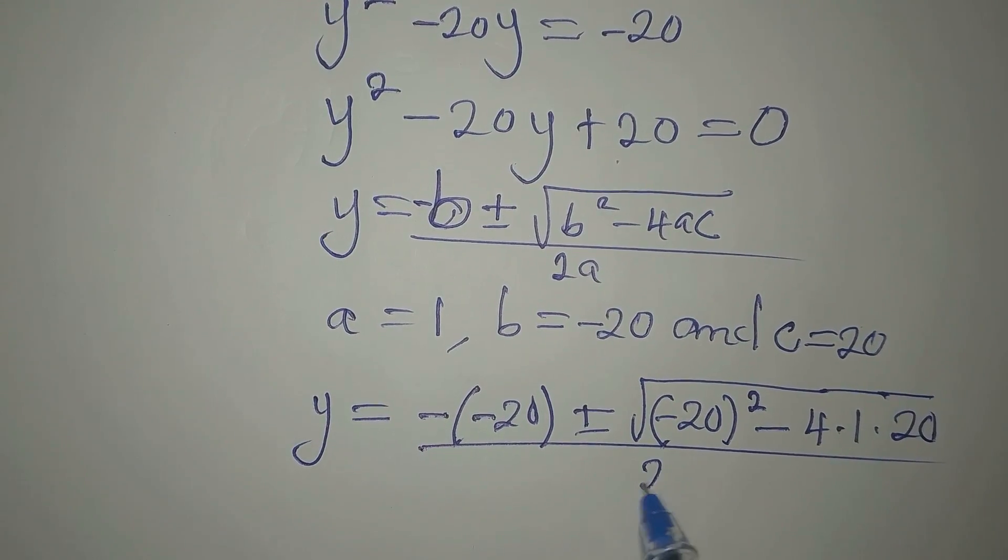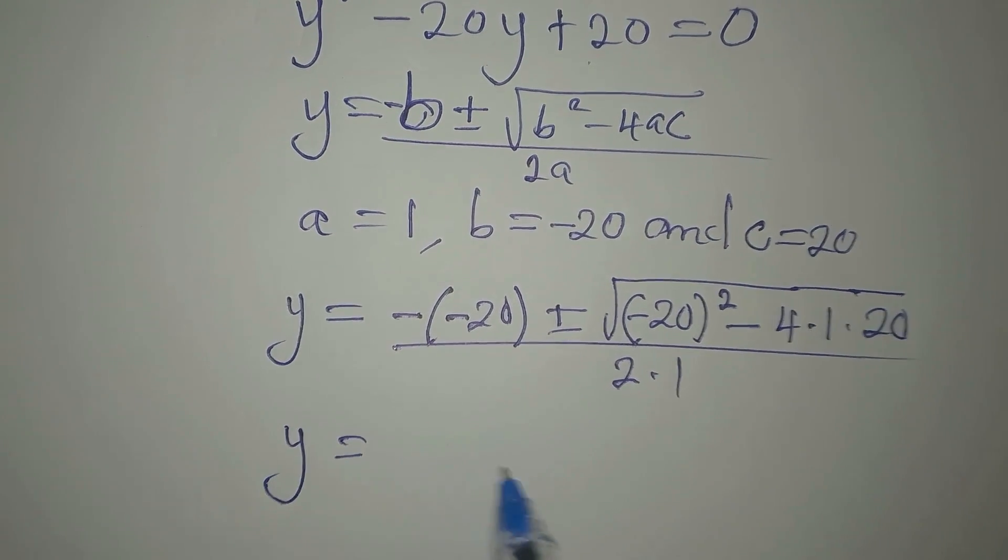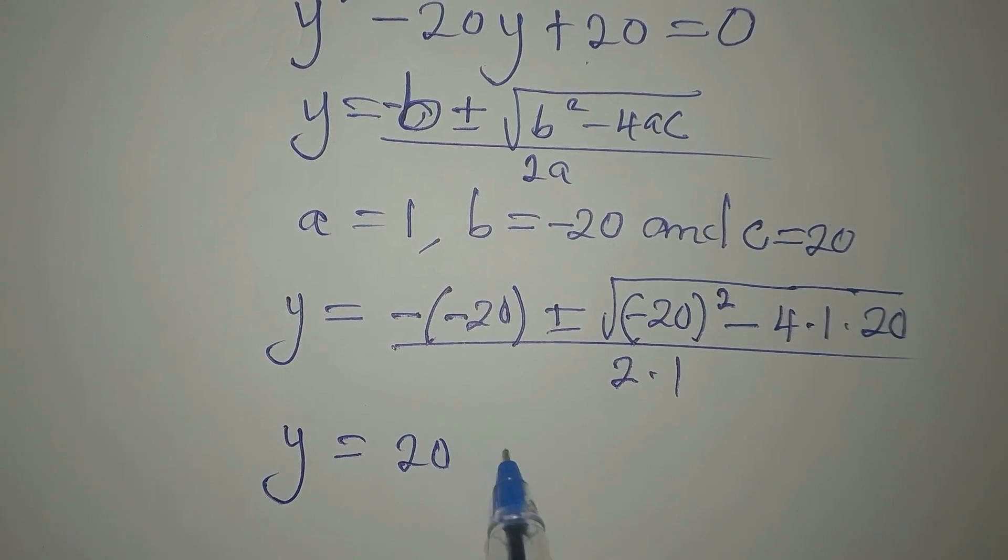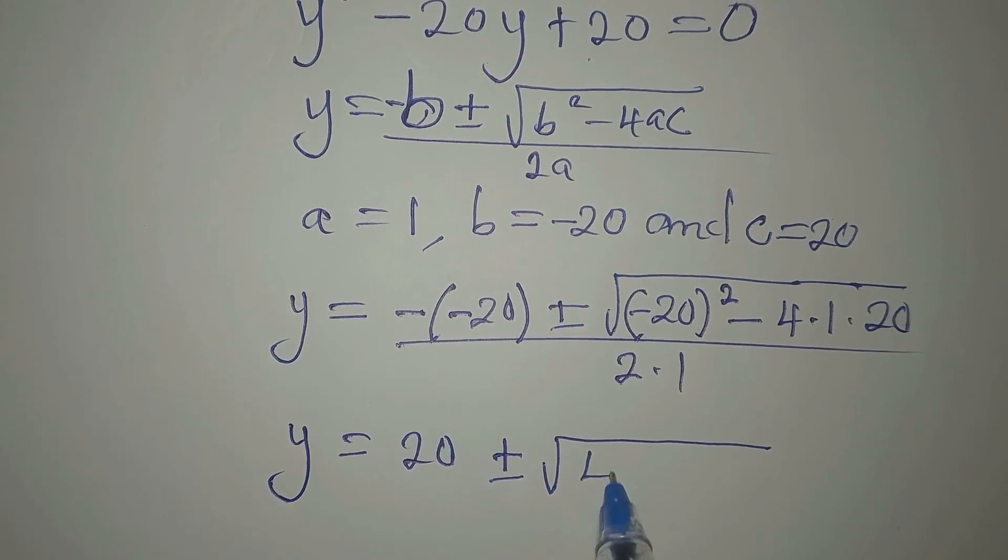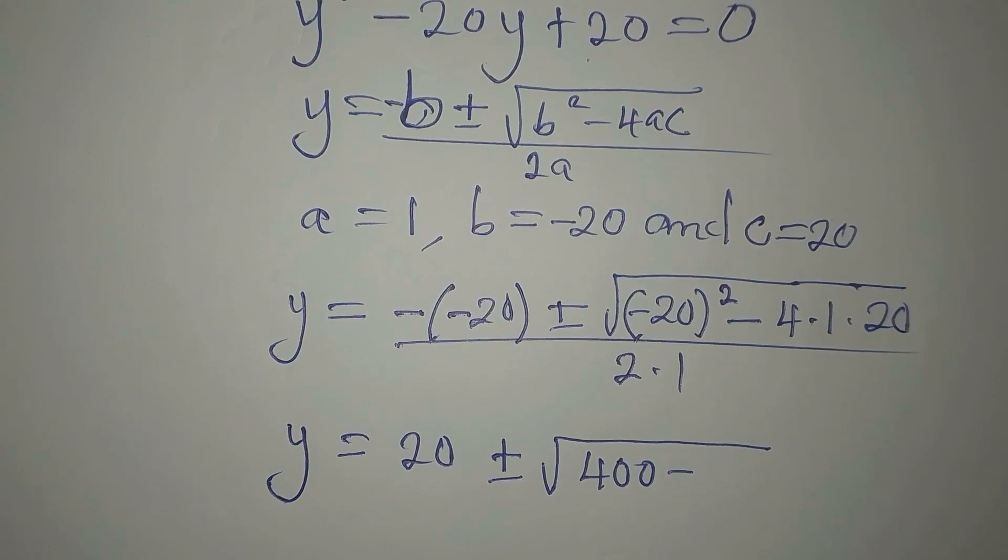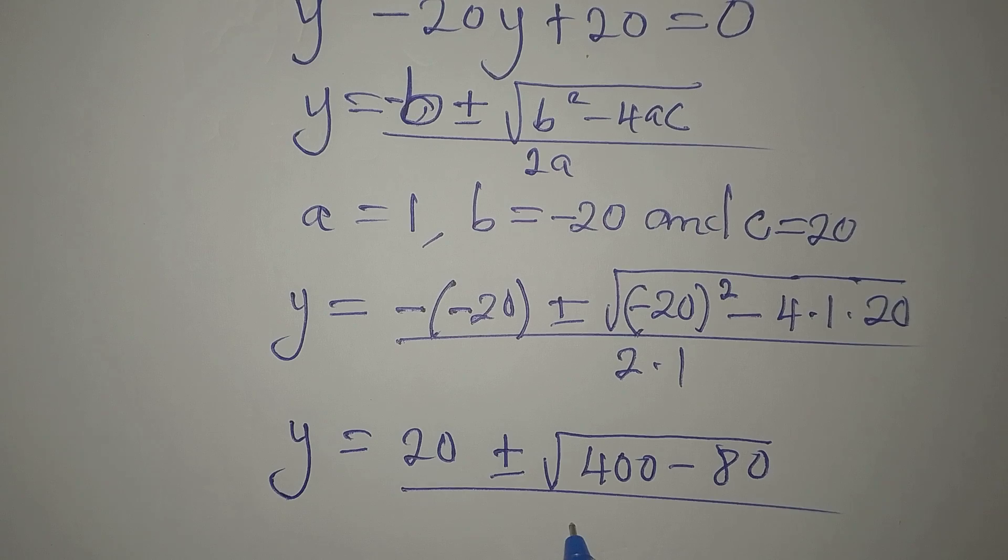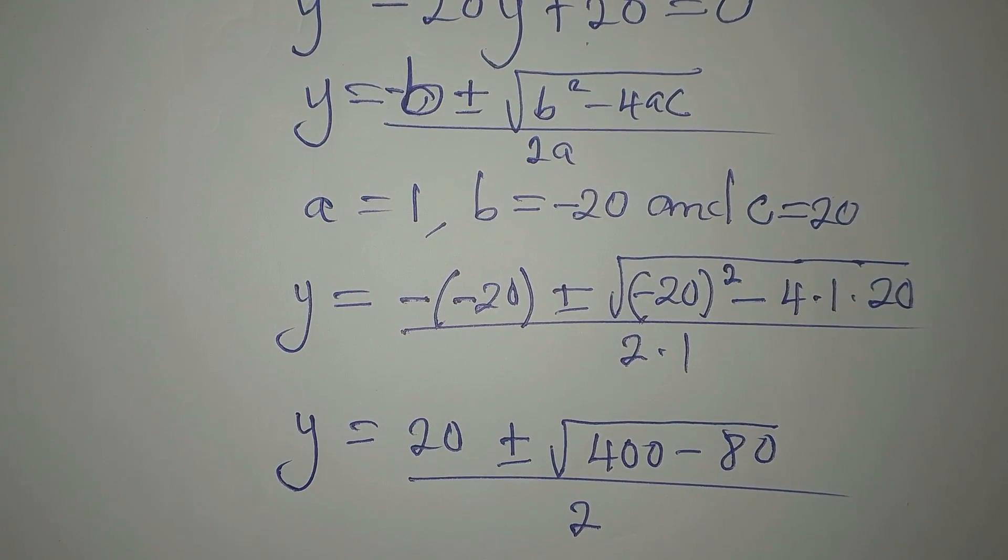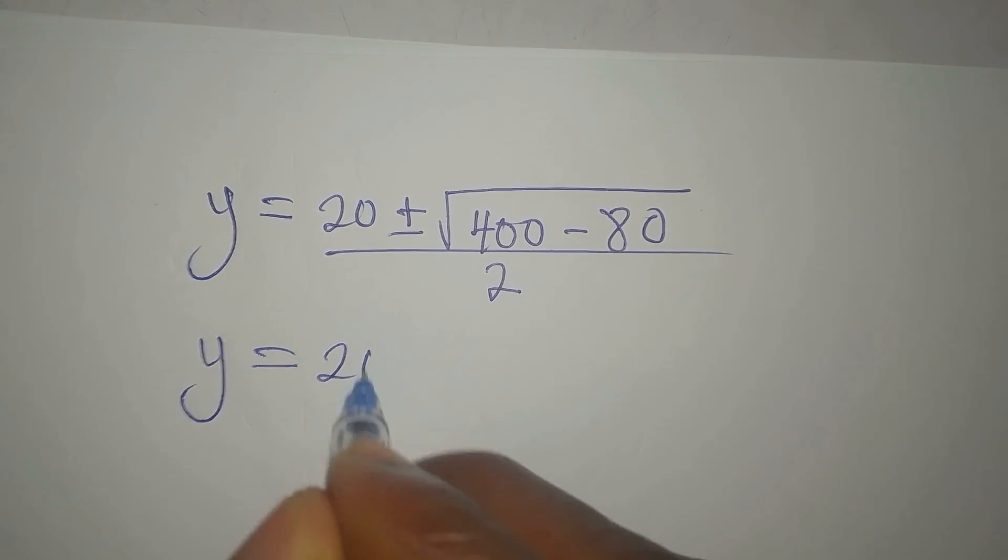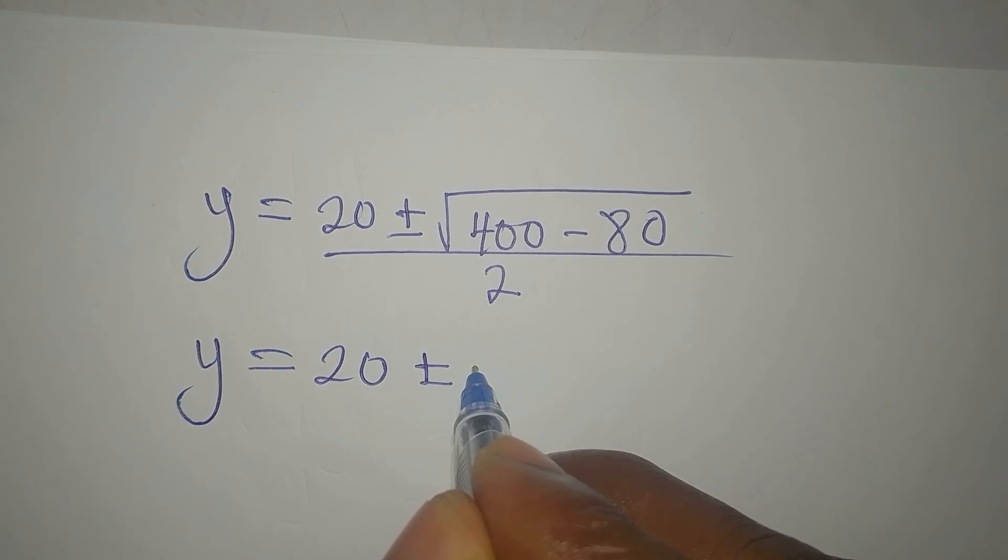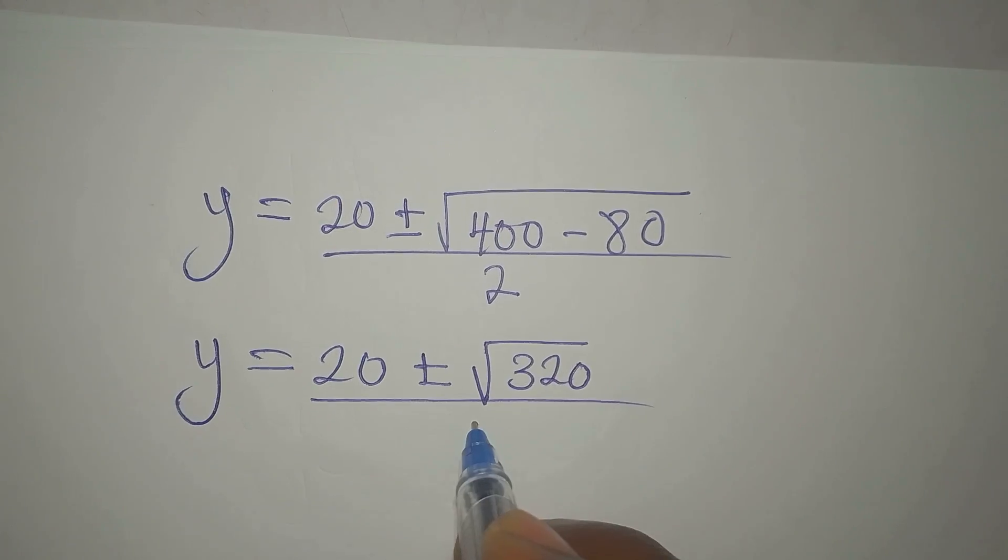To continue, y will now be negative negative is positive, so we write 20 ± √[(-20)² is 400, then 4 × 20 is 80]. We divide the whole of this by 2. So y now will be 20 ± √320 divided by 2.